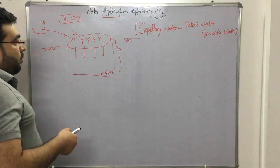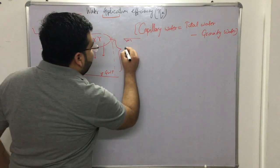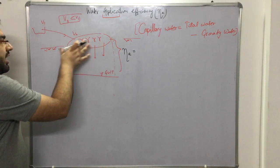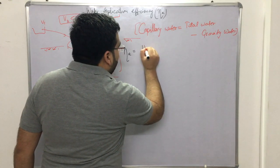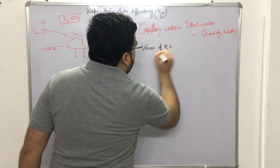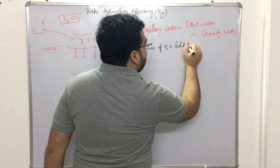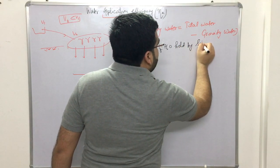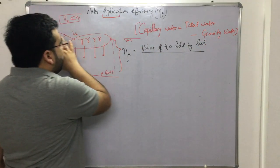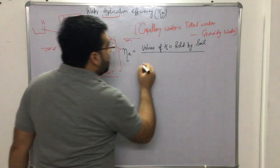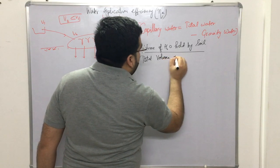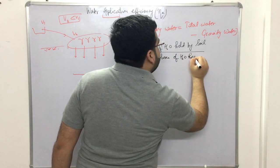Water application efficiency, denoted as η_a (eta a), equals the volume of water held by the soil divided by the total volume of water received by the field.